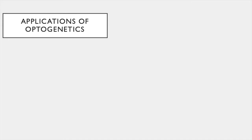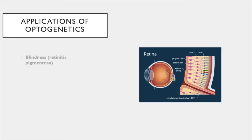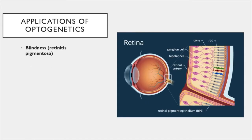Optogenetics also has many potential clinical applications. One application currently in clinical trials is the use of optogenetics to treat blindness in people with retinitis pigmentosa. In retinitis pigmentosa, the light-sensitive cells in your eyes — called rods and cones — begin to die off. What you can do is transfect the ganglion cells that relay the signal from the rods and cones to the brain, giving light sensitivity to those cells and bypassing the need for the dying rods and cones.